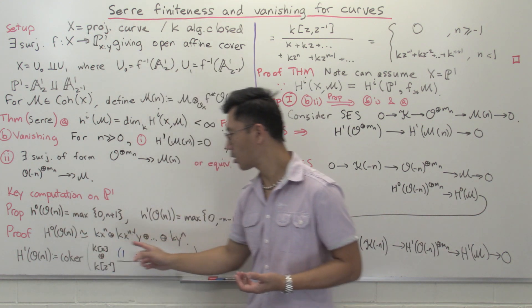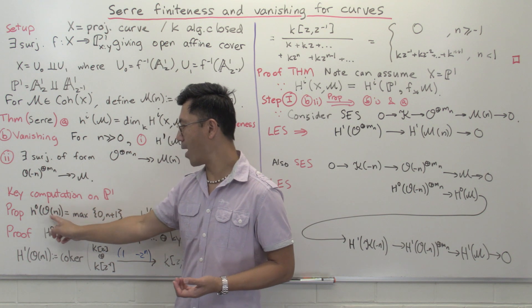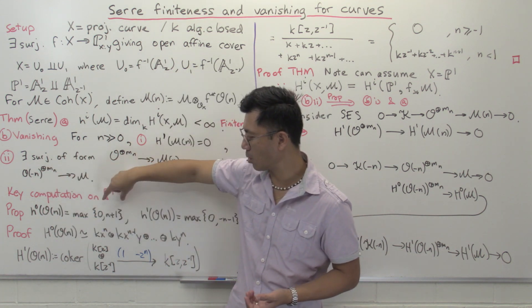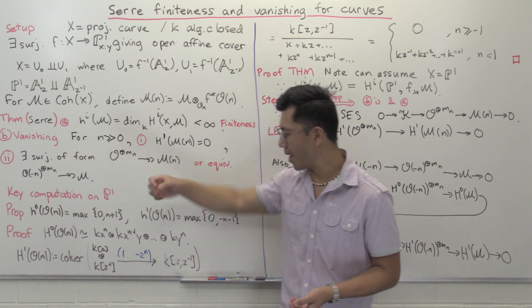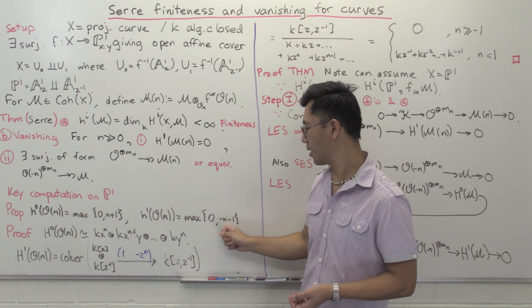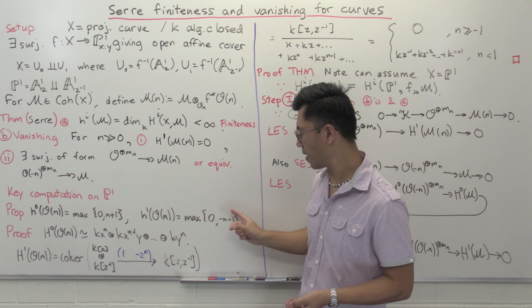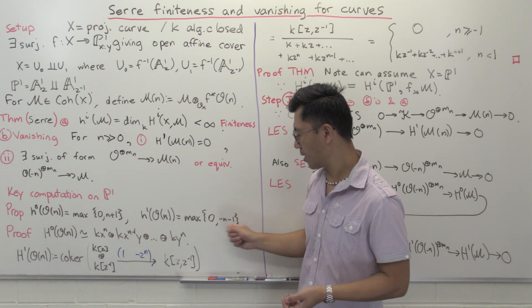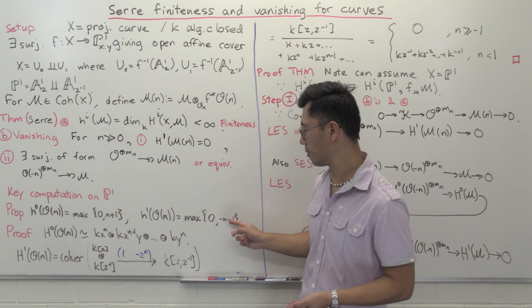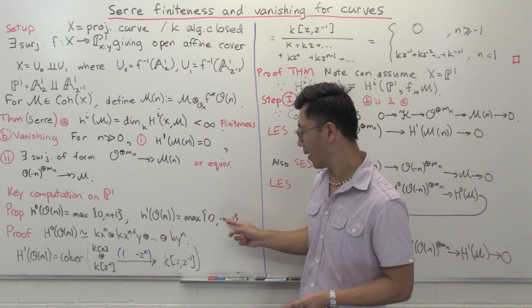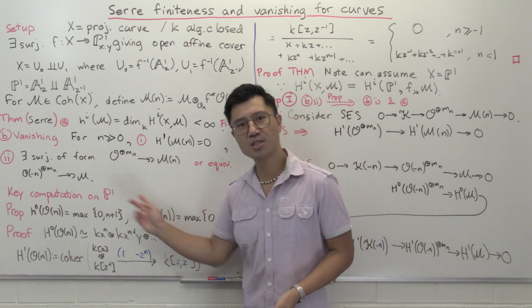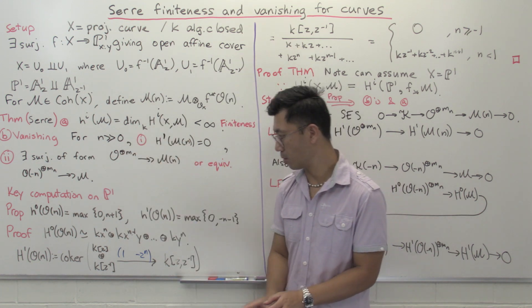The more interesting ones are these O(n)'s — the invertible sheaves on P1. The dimension of H0 of O(n) is max(0, n+1). For H1, it's max(0, -n-1). So if n is minus 1, you get 0 in H1; for values like 0, 1, and above, you get 0 as well. This is just a computation from the definition and it's actually quite nicely computable.